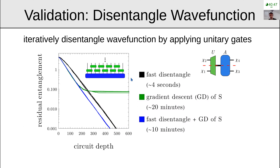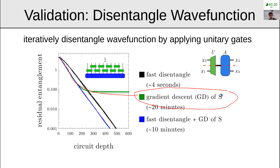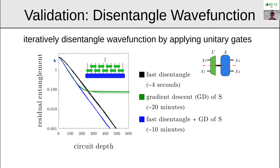I ask: if I do this for many layers, what is the residual entanglement left in the wave function after applying a circuit of some depth? With the new fast disentangling algorithm I get the black line, and with gradient descent of the entanglement entropy I get the green line. At the beginning, gradient descent minimizes entanglement faster than the fast algorithm, but not by much. Eventually, gradient descent plateaus due to singularities in the entanglement entropy.